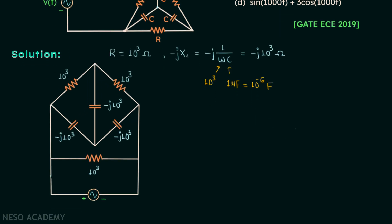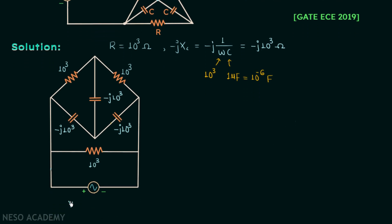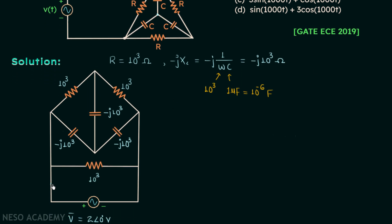Now we will move on to the voltage source. From the question, Vt = 2 sin(1000t), where 2 is Vm, the maximum value of voltage, and θV = 0°. Therefore the phasor voltage corresponding to the maximum value is V phasor = 2∠0° volts. The corresponding phasor current is represented by I phasor, and if we can find I phasor we can find the current I(t) that we want.